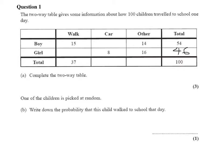Moving to the next column, 14 and 16 make 30. Coming to the last column, 15 and something make 37. Well, 15 and 15 makes 30, we need another 7. So 15 and 7 is 22.